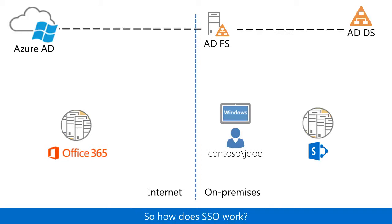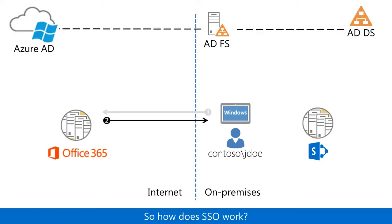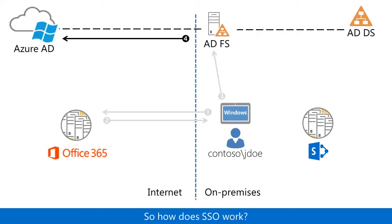Here's an example of how SSO works. An on-premises user requests a page in the Office 365 SharePoint farm. Assuming authentication has not previously been done, the Office 365 SharePoint farm refers the user's computer to the ADFS server for authentication. The user's computer requests authentication from the ADFS server, which forwards the credentials to Azure AD, the identity provider for Office 365.